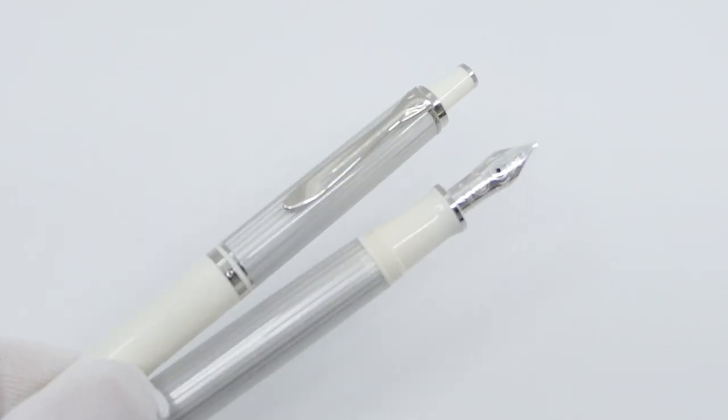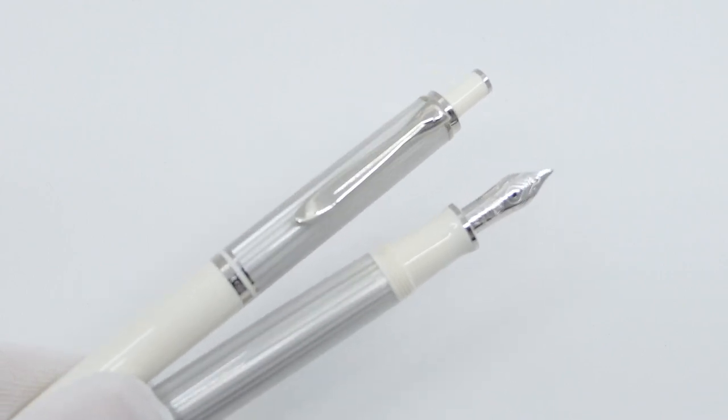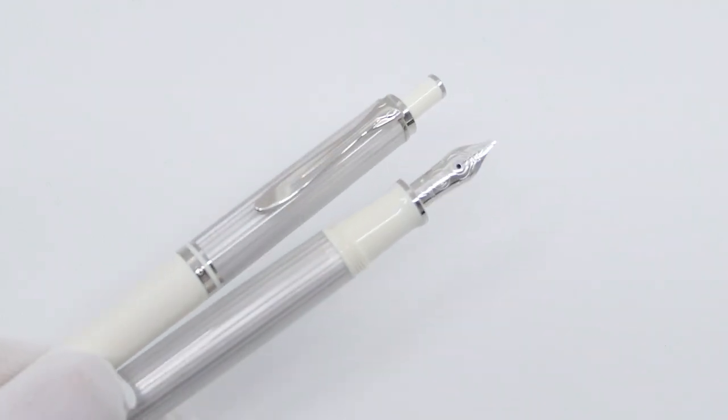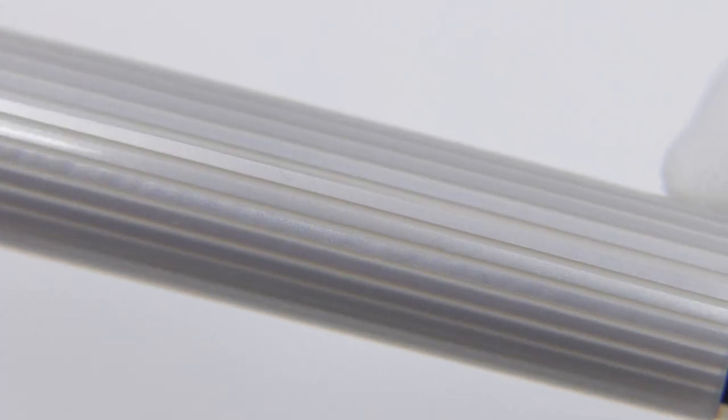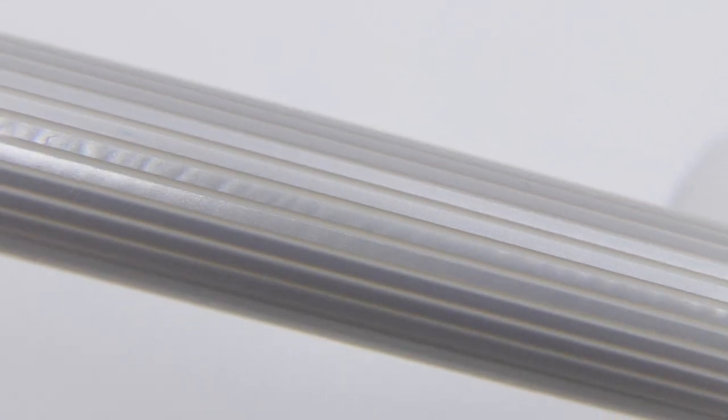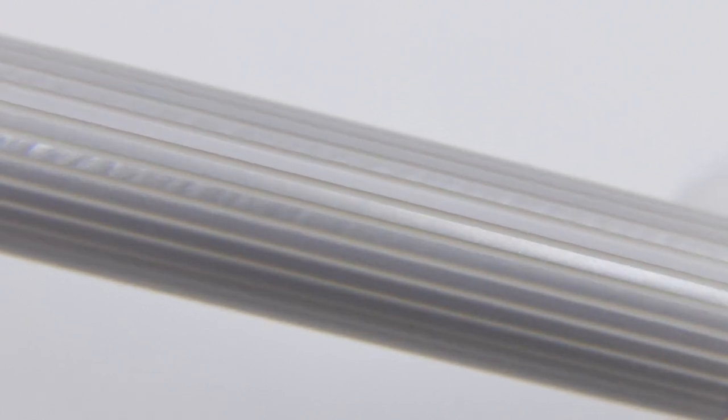The new M405 silver white is available as a fountain pen and ballpoint pen. The barrel of the silver white is made of the well-known striped cellulose acetate in silver. The other resin parts are made of white resin.